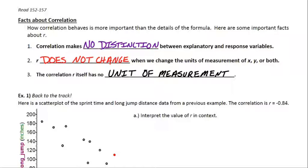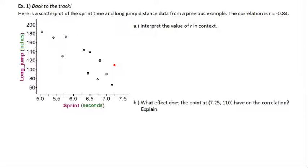Let's go back to the track example. We already did the scatter plot. Here's a computer output for it. It says the correlation is actually negative 0.84, which should make sense to you. It's a negative trend and it's pretty strong in the linear direction there. It says interpret the value of r in context.